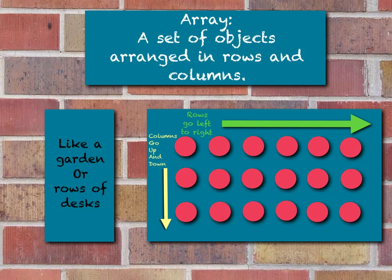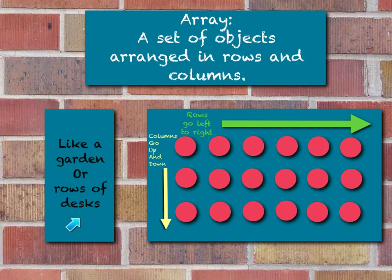The definition of array is a set of objects arranged in rows and columns. To make an array, we place the same number of circles in each row and the same number in each column. Columns go up and down, and rows go left to right — that's important to remember. Arrays kind of look like a garden or a row of desks, anything that you can think of that would be in rows and in columns.